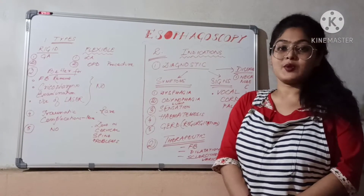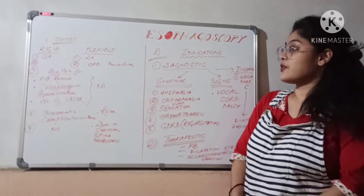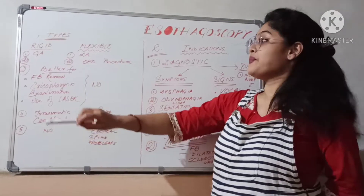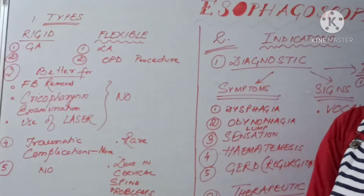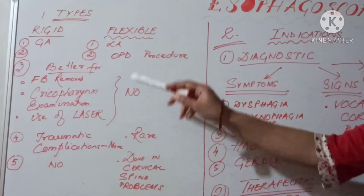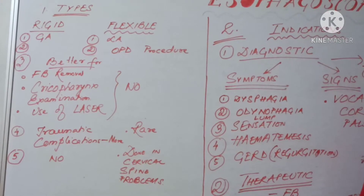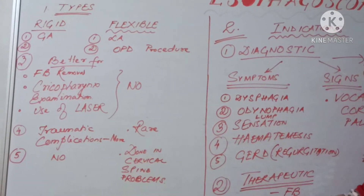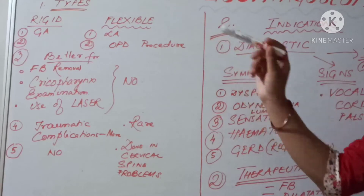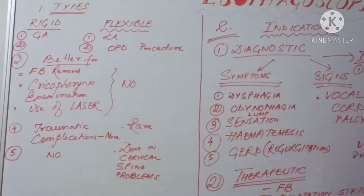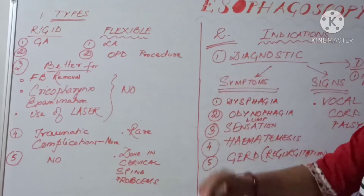How do you differentiate between the two? Rigid esophagoscopy is done under general anesthesia, whereas flexible esophagoscopy can be done under local anesthesia. Hence, flexible esophagoscopy is an outpatient, OPD procedure.